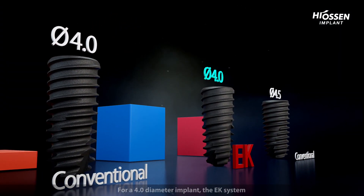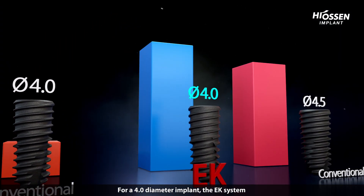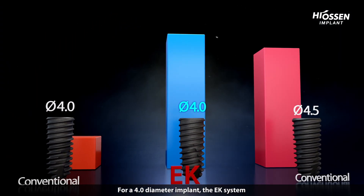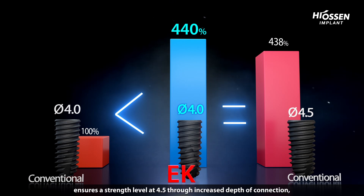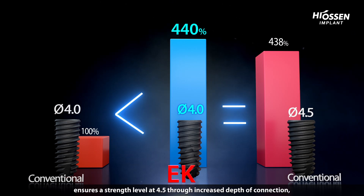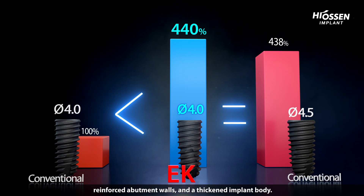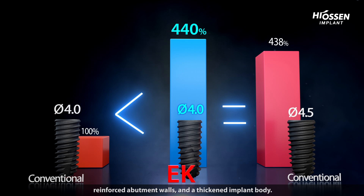For a 4.0 diameter implant, the EK system ensures a strength level equivalent to a 4.5 through increased depth of connection, reinforced abutment walls, and a thickened implant body.